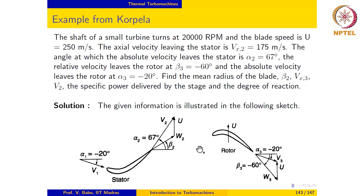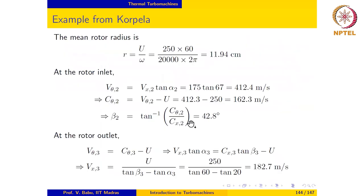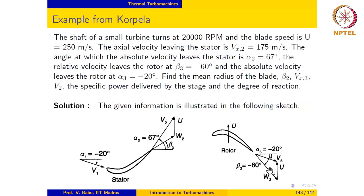So v-theta-2 minus u. The blade angle of the rotor at inlet, beta2, is arctangent of c-theta-2 over cx2, and that is 42.8 degrees. And as we know from here, this is in the counterclockwise direction, so this is positive.